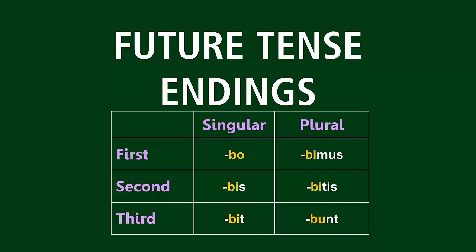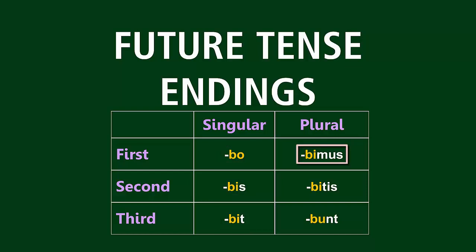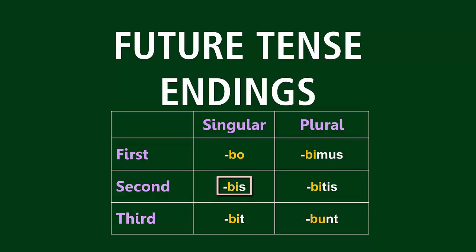Remember, since there's already an O in the first person singular, bo is fine just the way that it is. So the future tense endings are: bo, bis, bit, bimus, bitis, bunt.